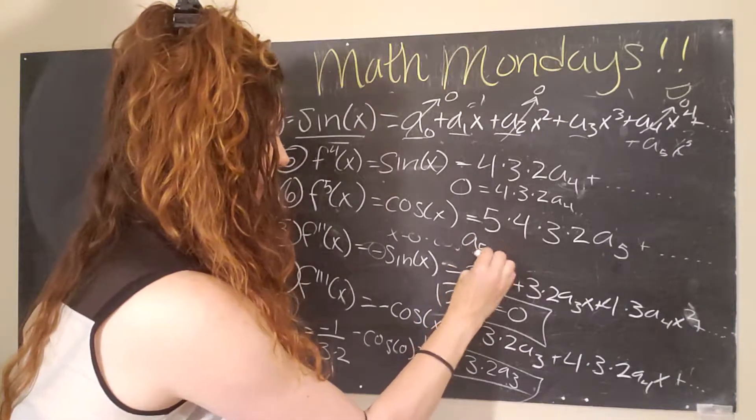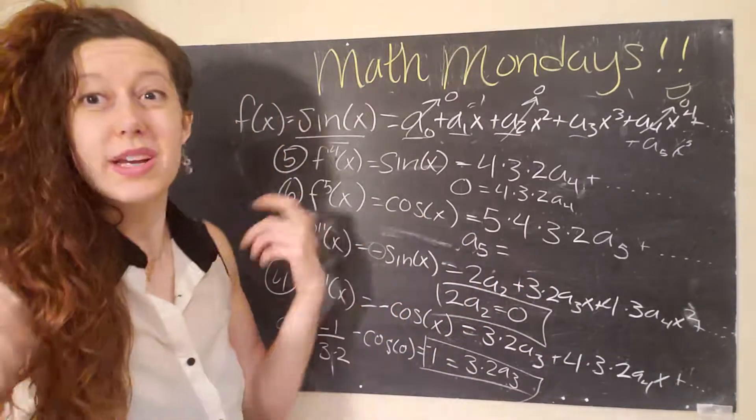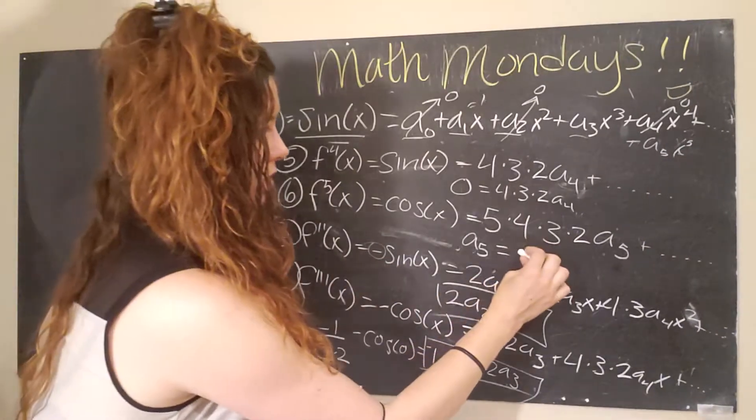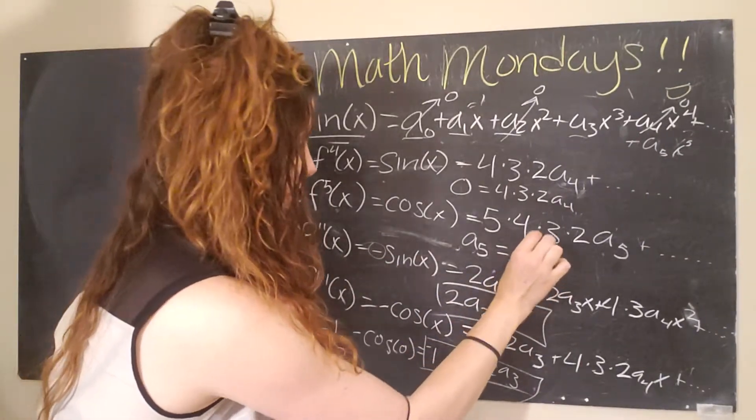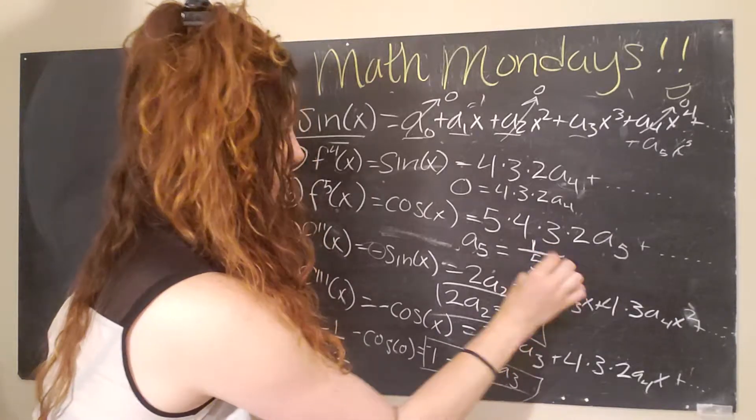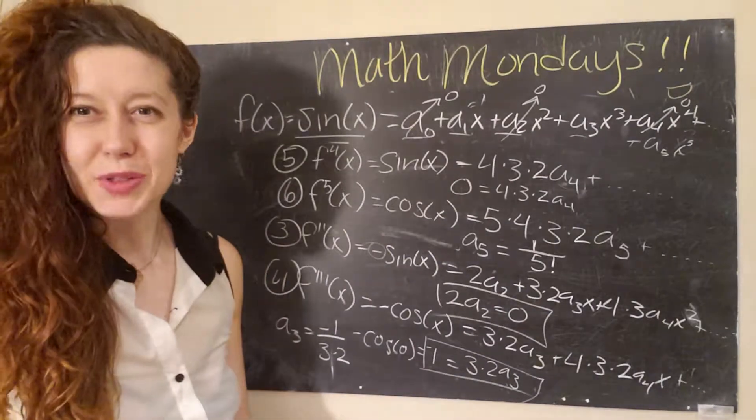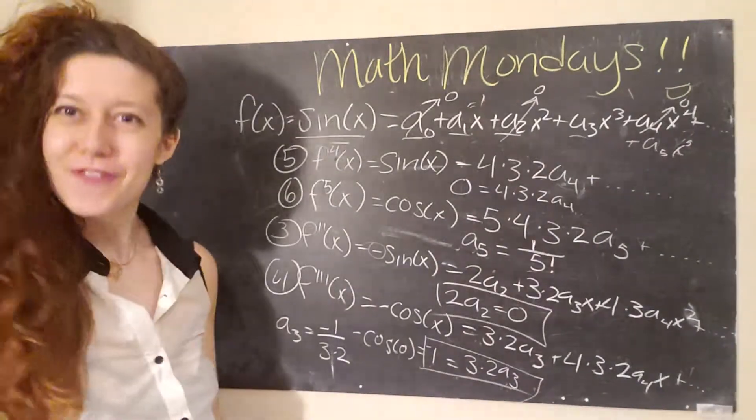And so you find, oh, look at that. A five has to equal, cosine of zero is one. And so a five equals one, a positive one over five factorial. Five times four times three times two times one is also five factorial. Very cool.